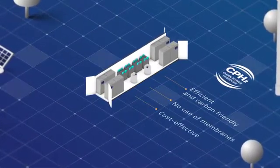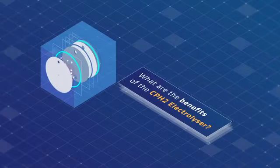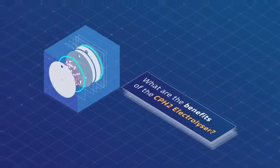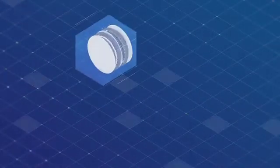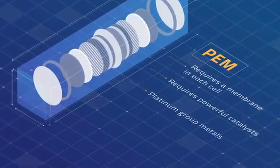This solution offers the most cost-effective and reliable production. What are the benefits of the CPH2 electrolyser? Proton exchange membrane technology requires powerful platinum group metals.